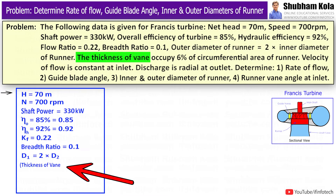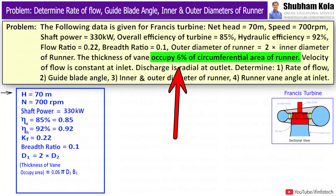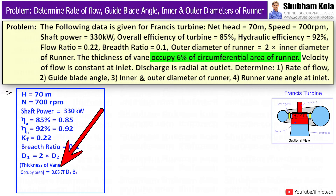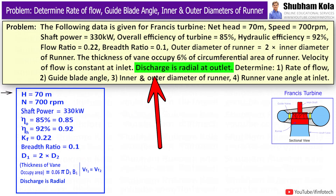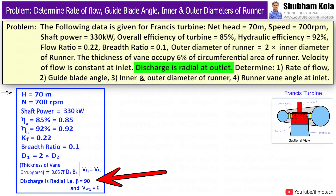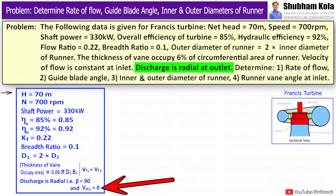Thickness of vane occupies 6% of circumferential area of runner, i.e. 0.06 π d1 b1. Velocity of flow is constant, i.e. Vf1 = Vf2. Since discharge is radial at outlet, angle β = 90°, hence Vw2 = 0.